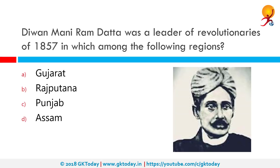Diwan Maniram Datta was a leader of revolutionaries of 1857 in which among the following regions? Maniram Datta Barua, popularly known as Maniram Diwan, was an Assamese nobleman in British India. He was one of the first people to establish tea gardens in Assam. A loyal ally of the British East India Company in his early years, he was later hanged by the British for conspiring against them during the 1857 uprising.